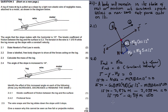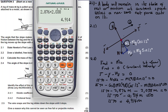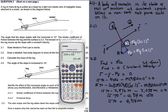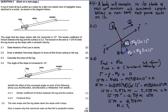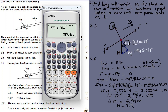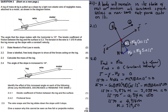So: 1570 minus 2.876m minus 2.038m equals zero. Collecting like terms: 2.876 plus 2.038 equals 4.914. So 1570 equals 4.914m. Dividing: 1570 divided by 4.914 gives the mass. The mass equals approximately 319.50 kilograms.